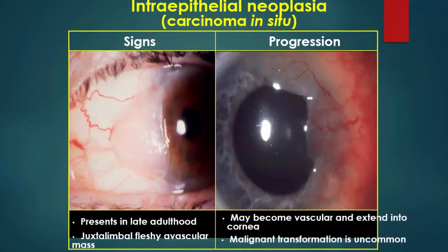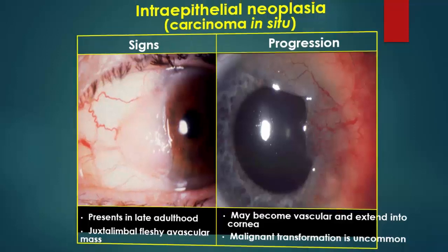Intraepithelial neoplasia, also called carcinoma in situ, presents in late adulthood as a limbal fleshy vascular mass. It may become avascular and extend to the cornea. Malignant transformation is uncommon. The main treatment is excision with mitomycin application, and the excision should be with a safety margin.